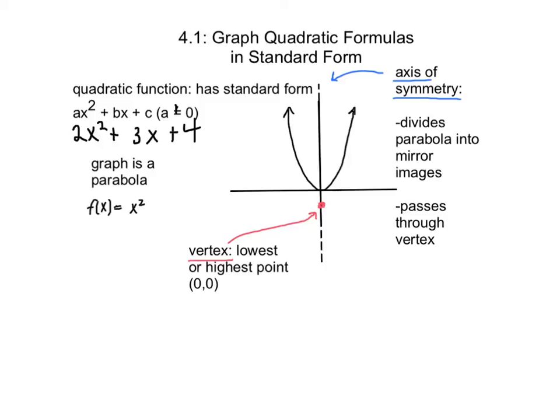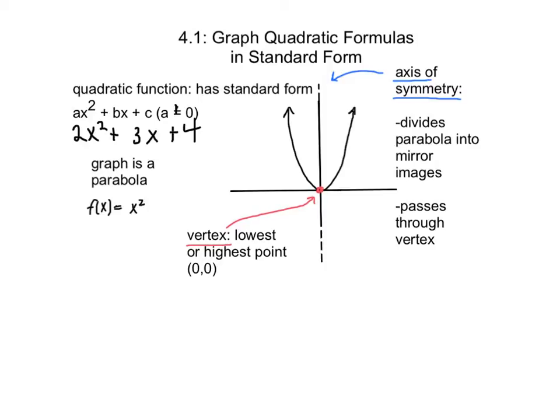The graph of a quadratic function is a parabola, with the parent graph being f of x equals x squared. This graph has an axis of symmetry — the dashed line — which divides the parabola into mirror images, so the left and right sides are exactly the same. The axis of symmetry passes through the vertex. The vertex is the lowest or highest point of the parabola, and here on the graph it is at 0, 0.